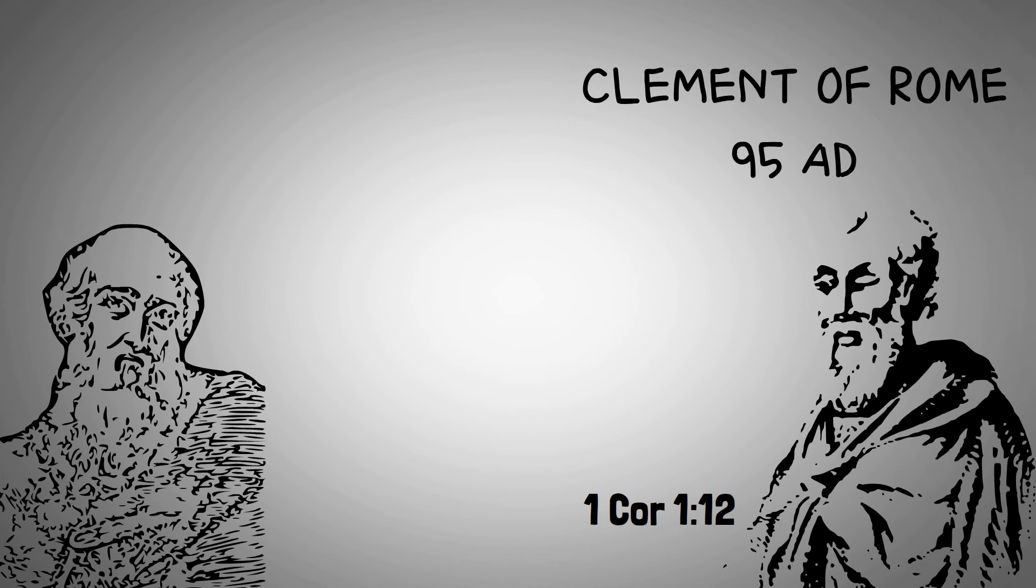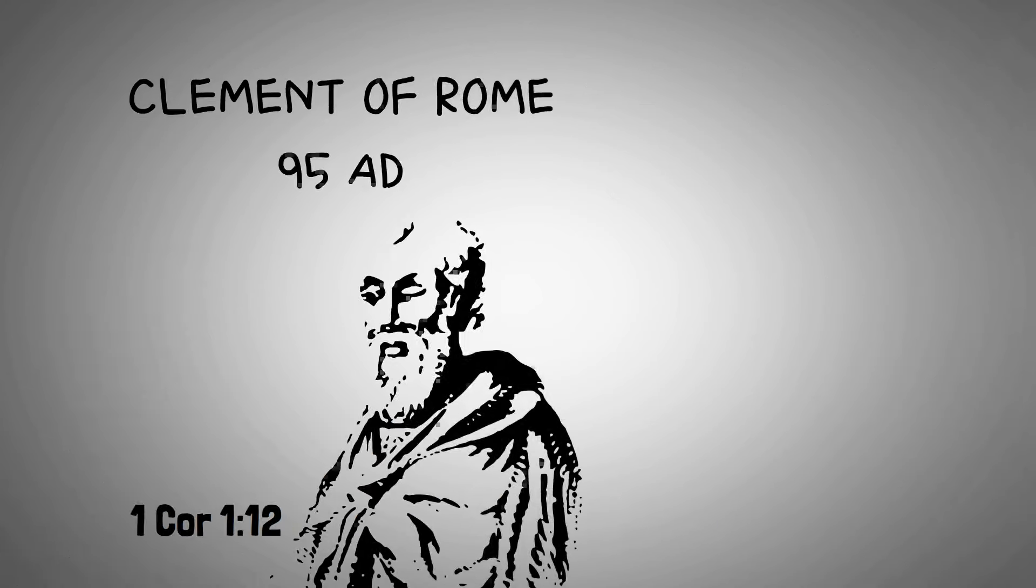Scholars date the letter to around 95 AD, so we have some pretty strong early attestation. Clement of Alexandria, Ignatius, and Tertullian also connect Clement to Peter and/or the letter of 1 Clement, so it's more probable than not that these traditions are reliable. We also have the letter from Polycarp, dated to around 110 AD. Irenaeus said Polycarp was a student of the apostle John. Polycarp also mentions the martyrdom of Paul and Peter. So here we have two very early traditions of the martyrdom of Peter and Paul.